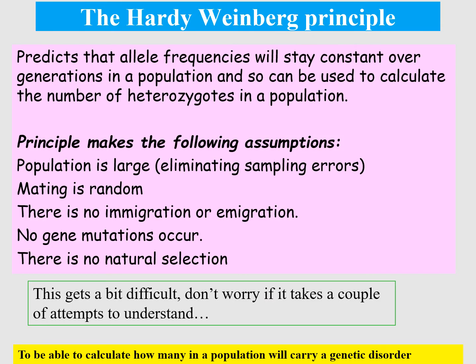Introducing the Hardy-Weinberg principle: it's a principle that predicts the allele frequency in a population, and it predicts that the allele frequency will stay constant over generations. You could therefore use it to calculate things like the number of heterozygous individuals within a population. The principle can only be used if a population is large, randomly mating, with no immigration or emigration, no mutation, and no natural selection — because all these things would alter the allele frequency, meaning you couldn't use Hardy-Weinberg.